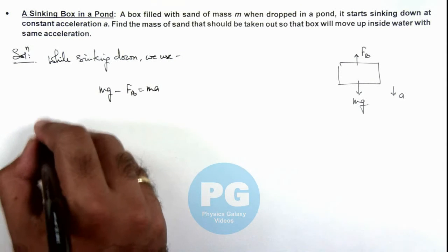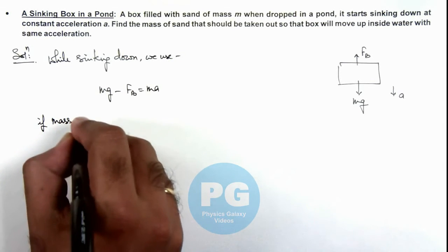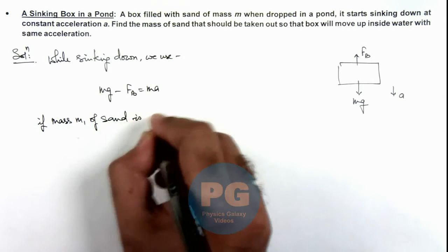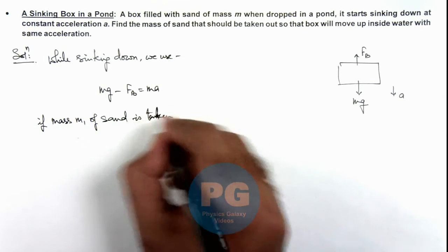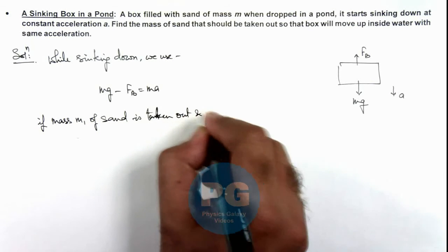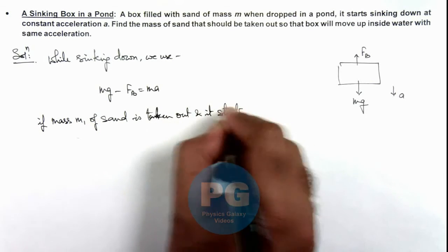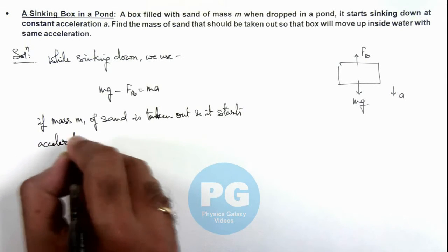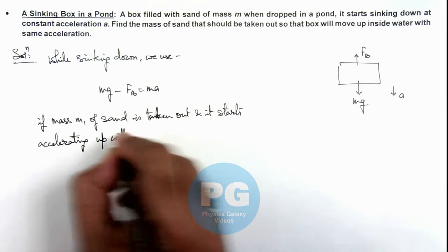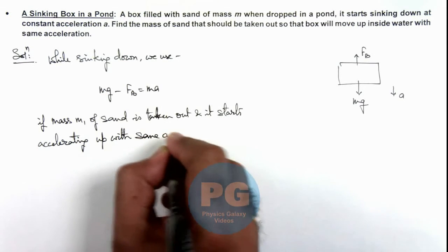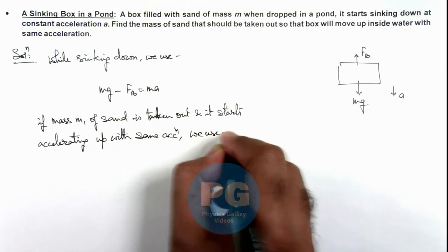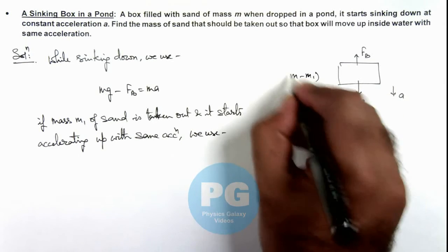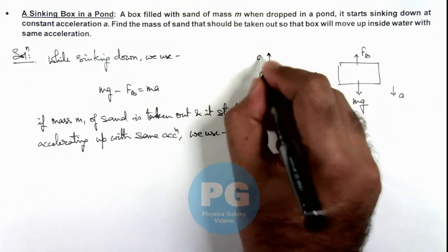And we can write if mass m1 of sand is taken out and it starts accelerating up with same acceleration, then here we use, if its mass is changed to m minus m1, as m1 mass is taken out, it starts going up with acceleration ay.